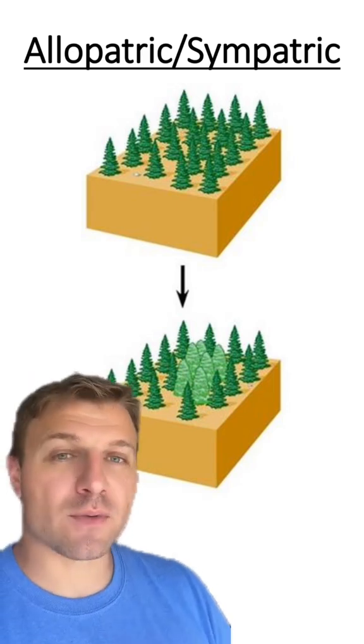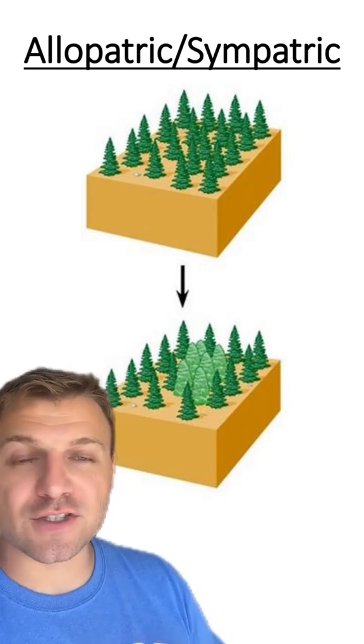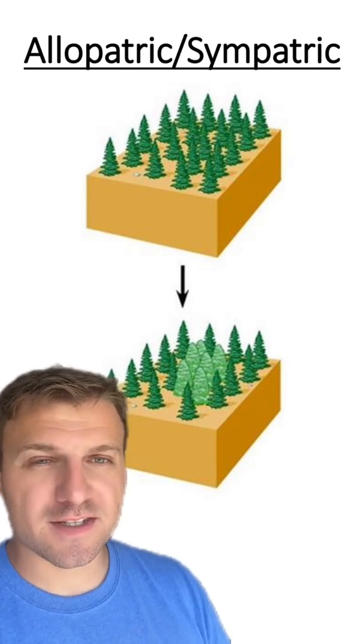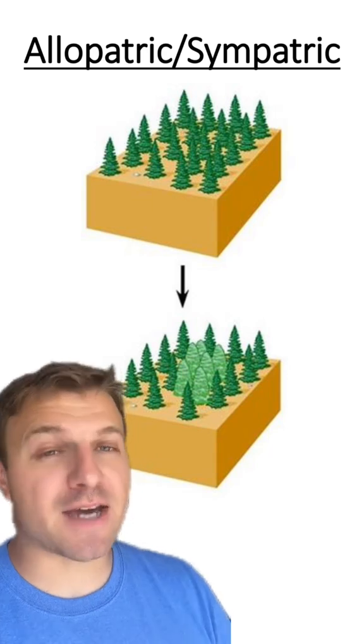Alright here's our next one. You can see the original species of trees divide into two separate species within the same environment. So what type of speciation is this? This is another example of sympatric speciation.